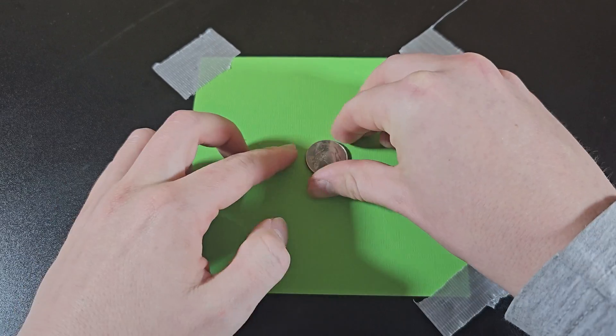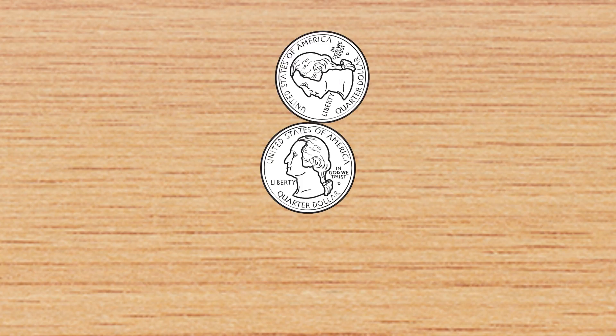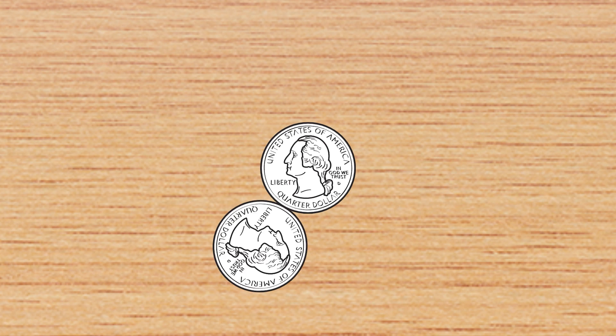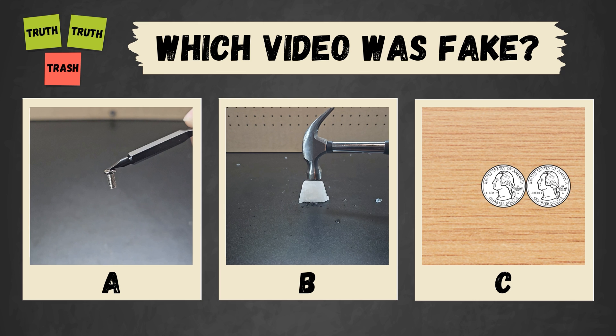If you fix one of two equal sized coins in place and roll the second one around it, the second coin will do one full rotation like this before returning to its original position. You've seen all three videos now, pause to vote in the comments which one you thought was fake.